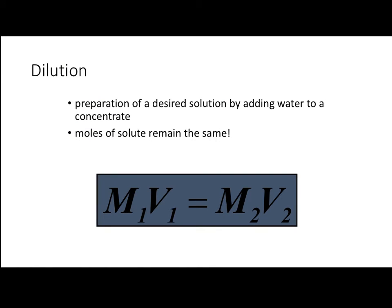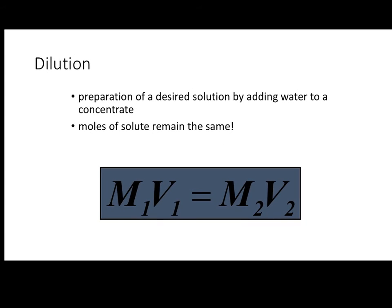Let's go ahead and look at dilutions. A dilution is the preparing of a solution by adding water to a more concentrated solution — like making orange juice from a frozen concentrate, where you add water until the appropriate volume is reached. In the dilution process, the total number of moles remain the same. The number of moles of solute dissolved are constant; the only thing that changes is the amount of solvent added. For dilution calculations, we use the equation M1V1 = M2V2.